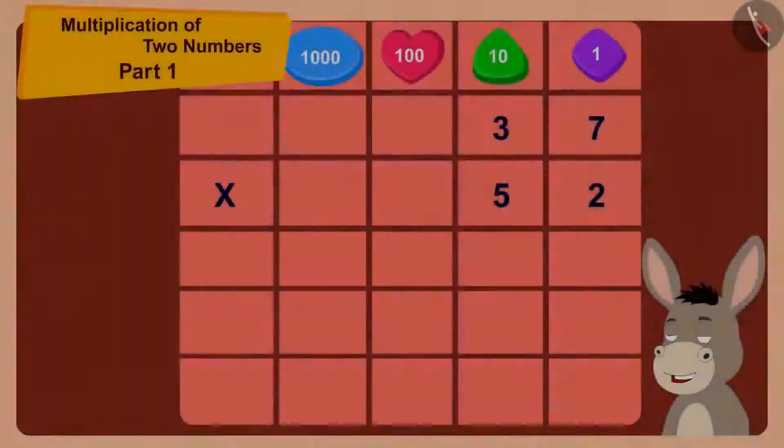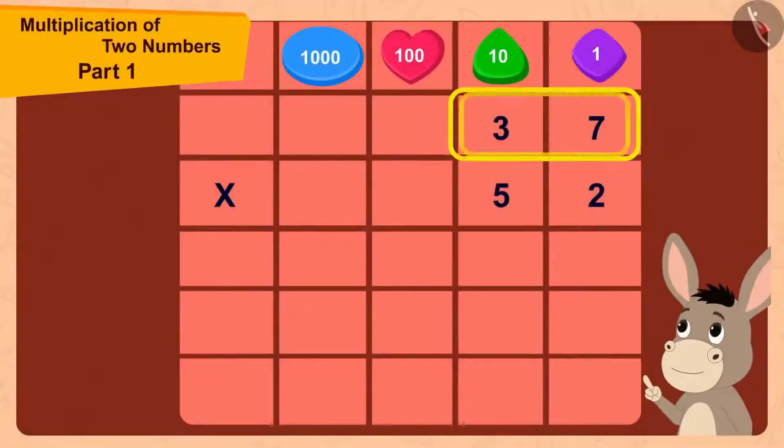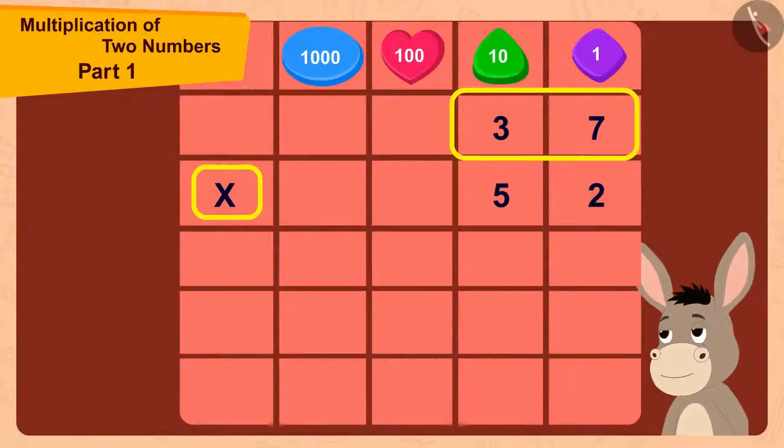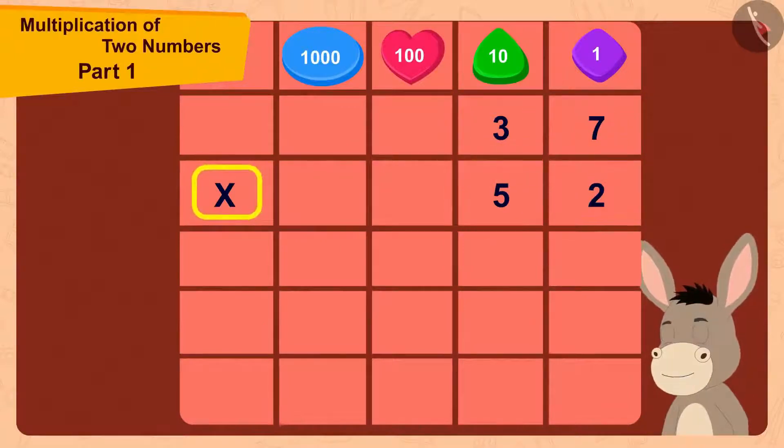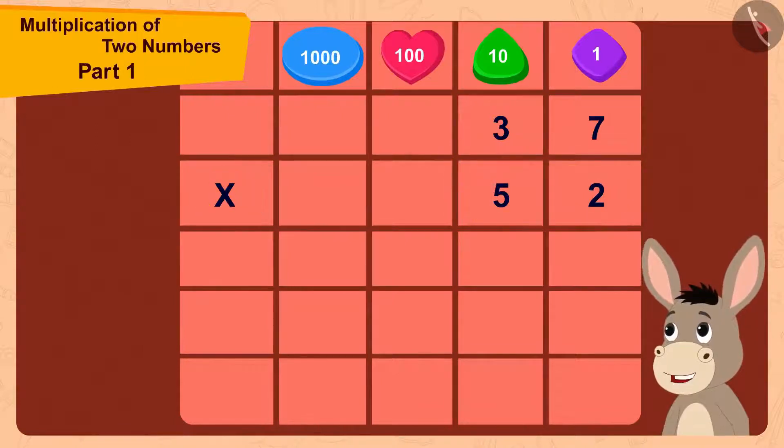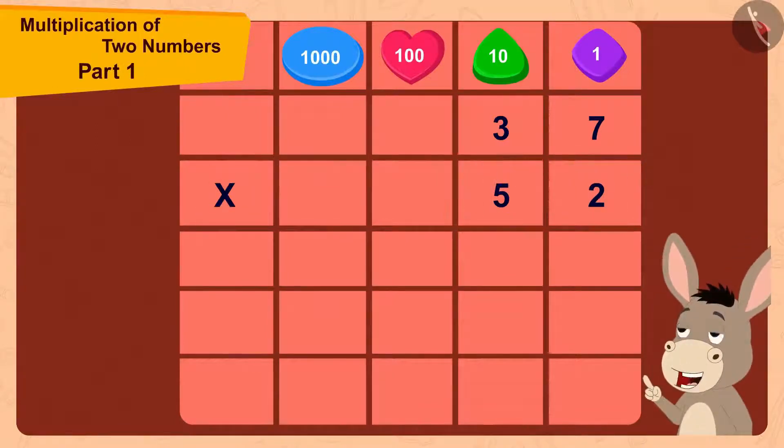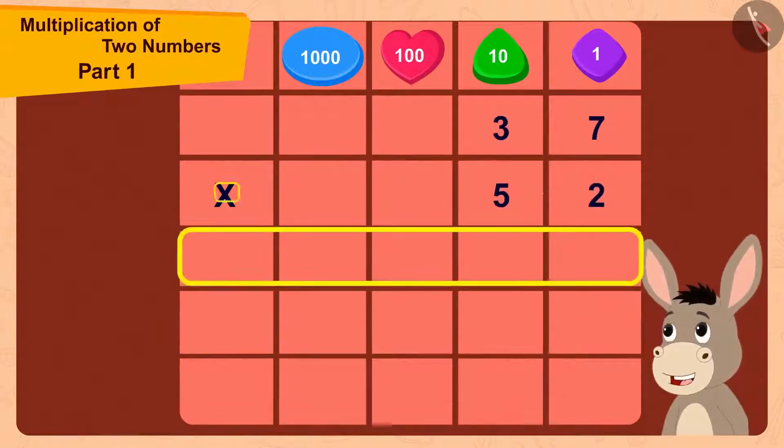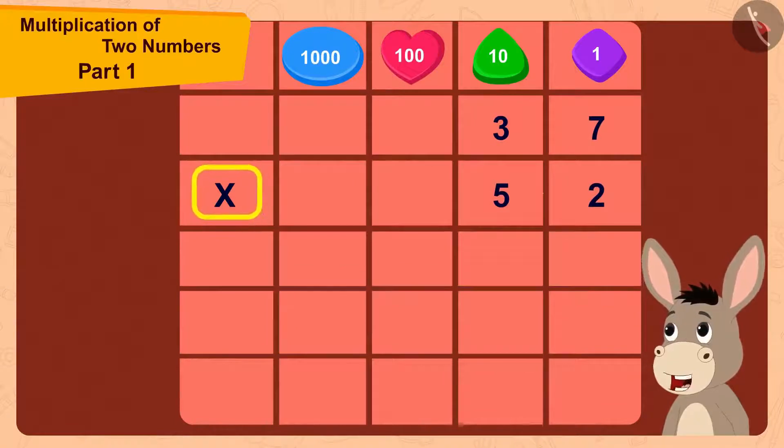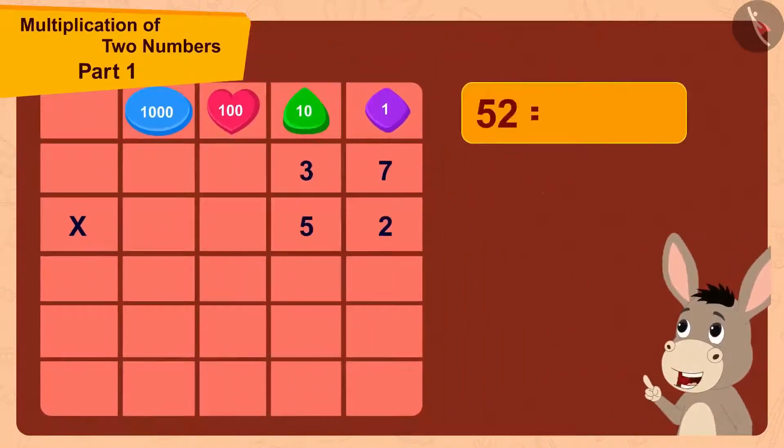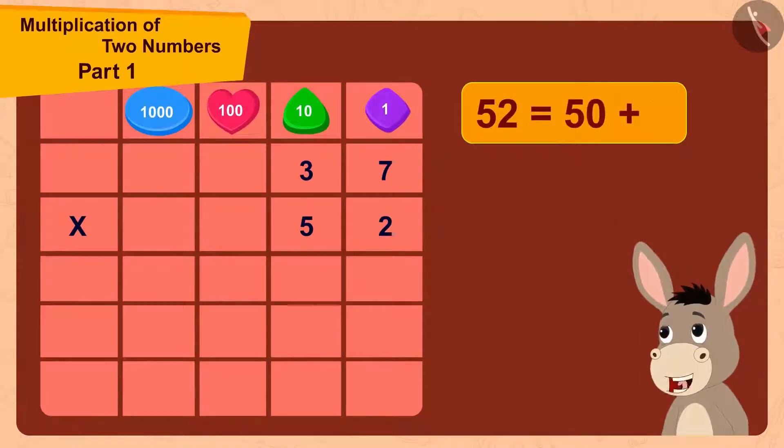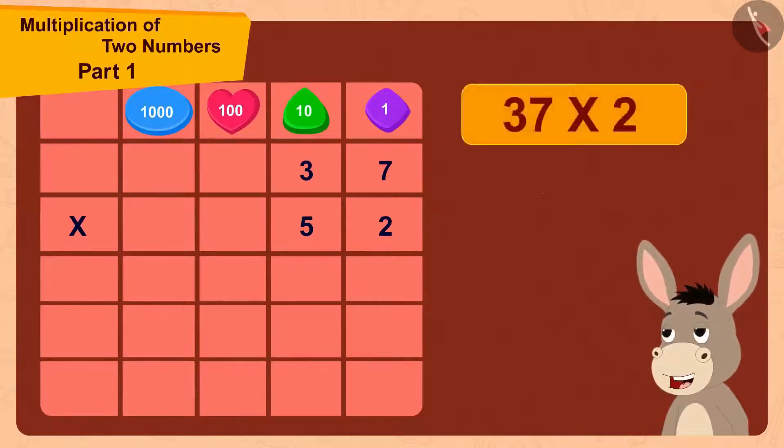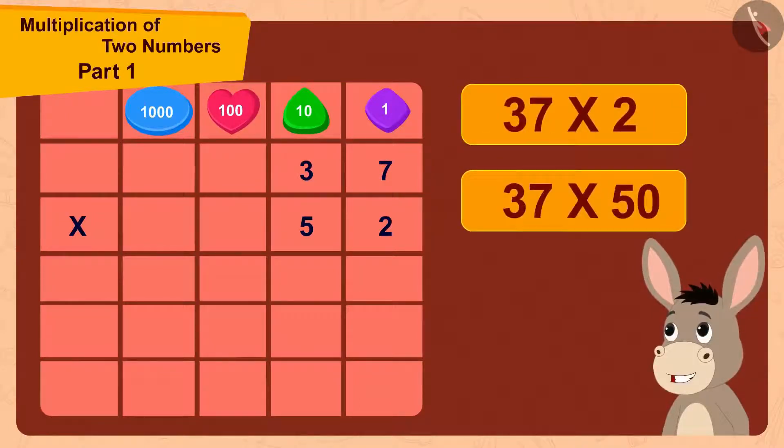Here, the two-digit number 37 is being multiplied by the two-digit number 52. And because 52 is a two-digit number, I can multiply 37 with 52 in two steps. 52 is made by adding 2 to 50. So first I will multiply 37 by 2 and then multiply it by 50.